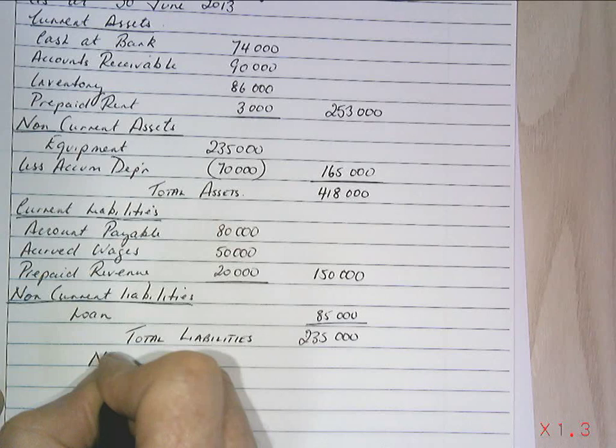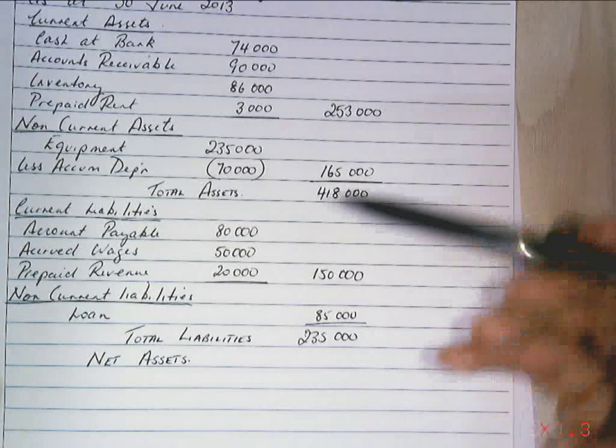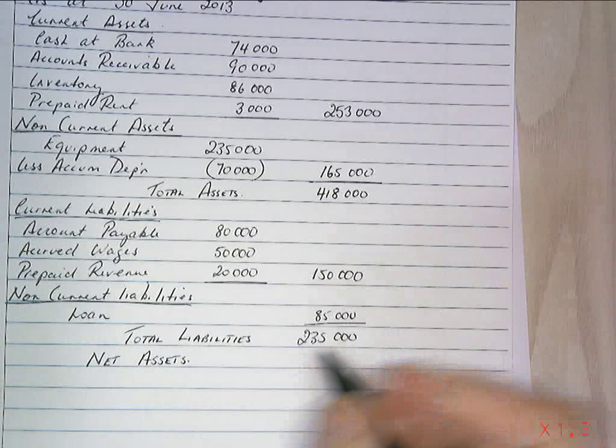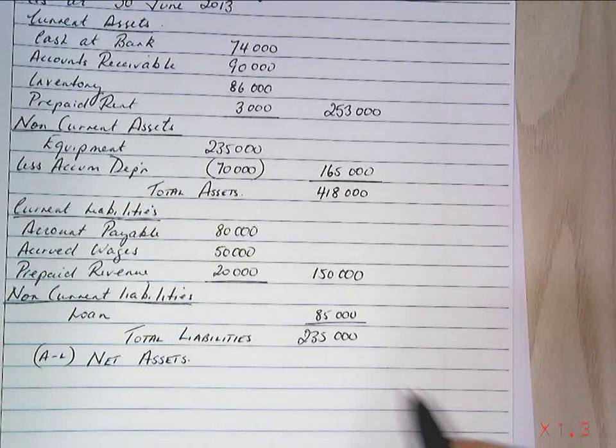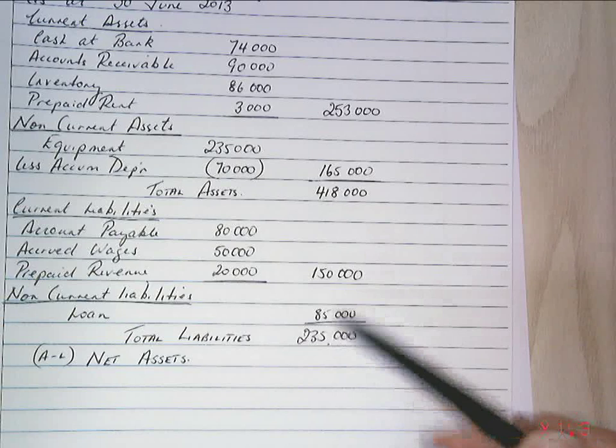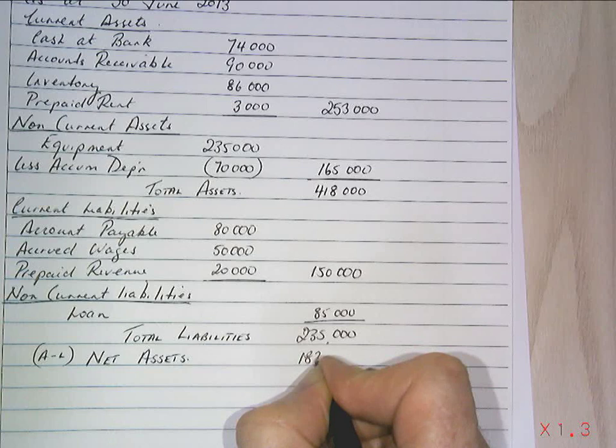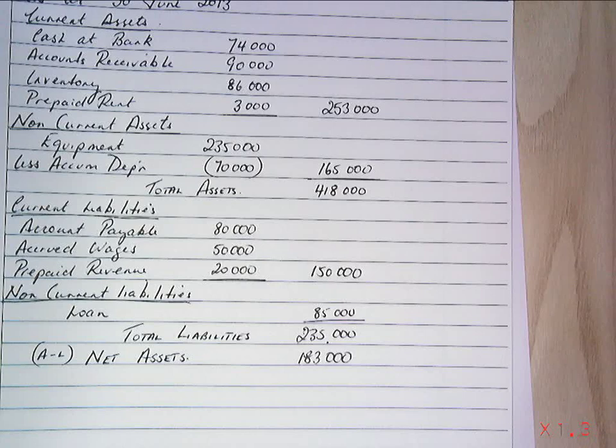Because it's a classified balance sheet, I now calculate net assets — that's assets minus liabilities. So $418,000 minus $235,000 gives me net assets of $183,000.